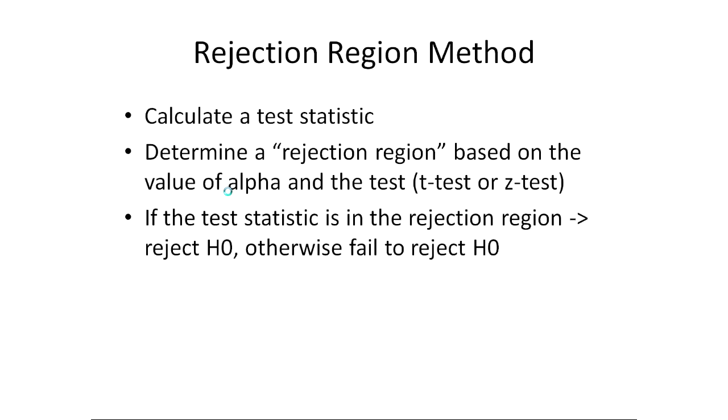The other method that we'll see is the rejection region method. In this method, we calculate a test statistic. And we compare this to a rejection region which we draw on either a t distribution or a z distribution when we're talking about the mean. How we draw this depends on which tail test it is and what the value of alpha is. We'll end up with this value, this cutoff from a table based on this rejection region and we'll compare our test statistic to that.